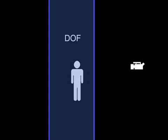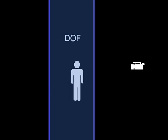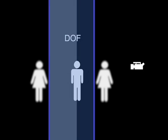Anything that is within this region will appear as sharp and in focus, and anything outside of this region will appear as out of focus. Notice that the back portion of the depth of field is larger than the front. The difference between these two portions changes depending on the setup, but in every case the back portion is larger.